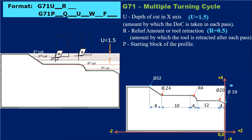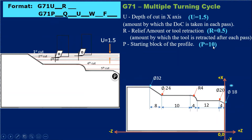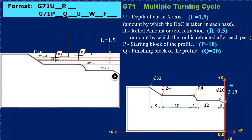P is the start block of the profile. The programming starts from this point, indicated by P. I've noted P equal to 10 — you can take 10 or 100, any value — but when writing the program, the same value must be used consistently. Q indicates the finishing block or end block of the profile, where the program ends. I've given Q a value of 20. You can also take 200; it doesn't matter.